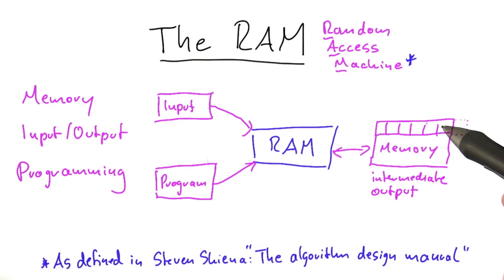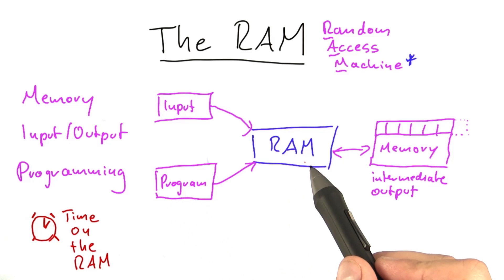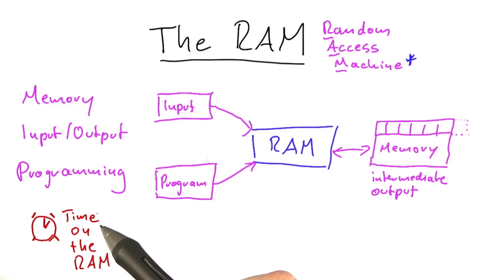Now if we are running a program on the RAM, what we're mainly interested in is the time that this program is going to run for a given input. And there are basically three rules for how long the RAM requires to execute a program.